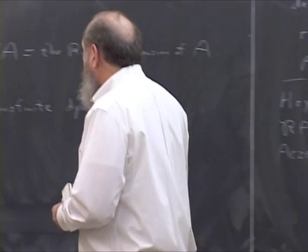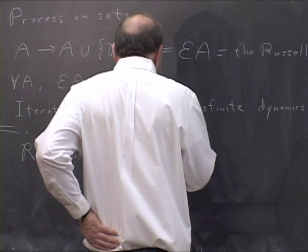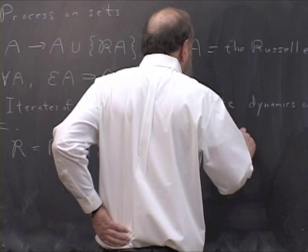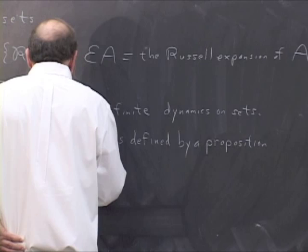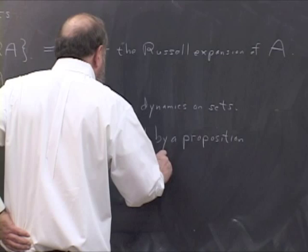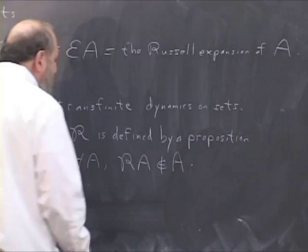One of the main properties, well, R is defined by a proposition. For every a, Ra is not an element of a.